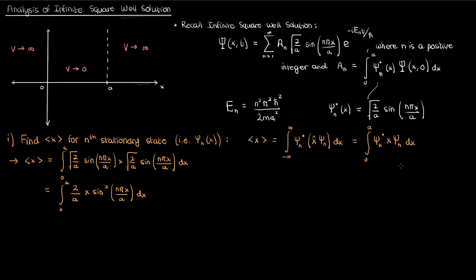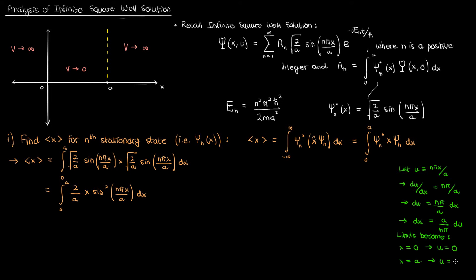To simplify the expression inside the sine, I'll use u-substitution. I'll define u to be nπx/a, which means du equals nπ/a dx, so dx is just a/(nπ) du. With this substitution the limits change: when x is 0, u is 0, and when x is a, u is nπ. Making the substitution and rewriting x as a/(nπ) times u gives the following expression.